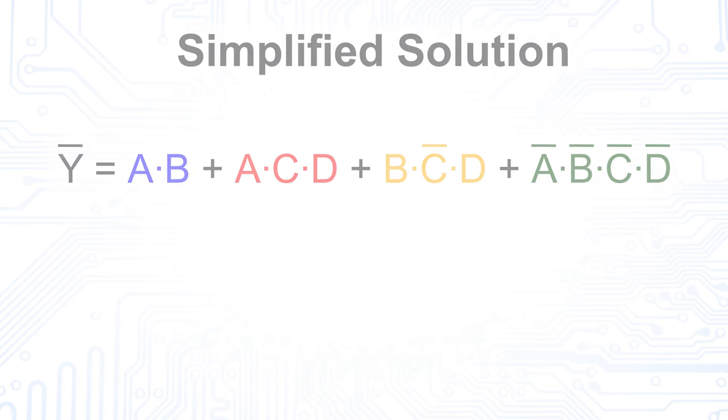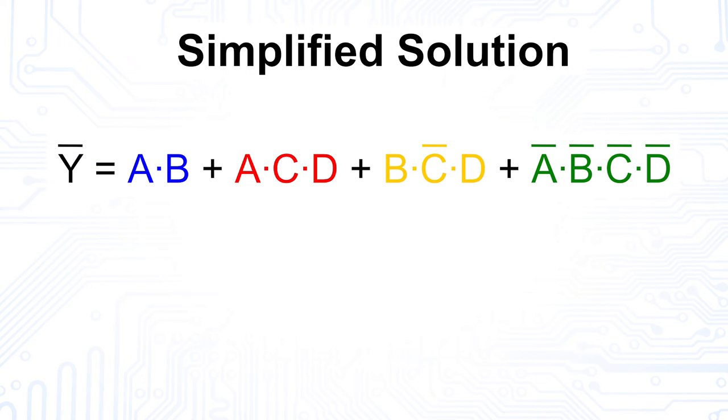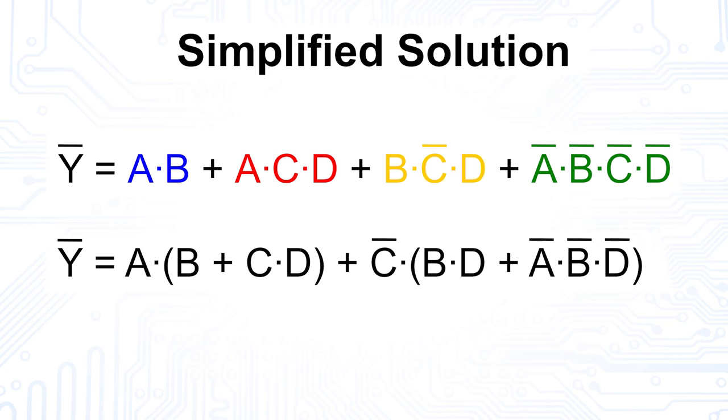So, we see that large fields lead to small terms, which ultimately leads to fewer MOSFETs in our CMOS circuit. This simplified form of the Boolean equation using the Karnaugh map does not have to be the smallest possible form. Sometimes, you can still simplify things, but in general, it's a good approach.